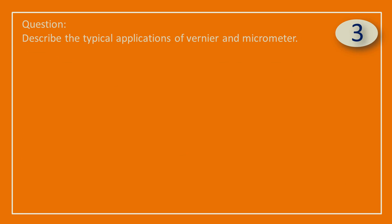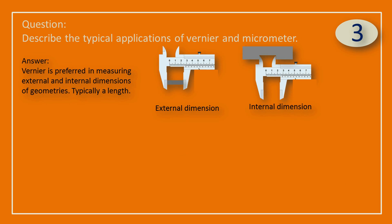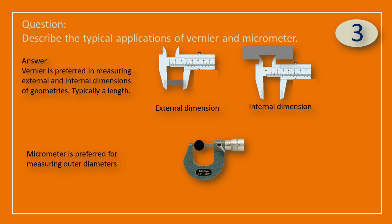Question: Describe the typical applications of Vernier and micrometer. Answer: Vernier is preferred for measuring external and internal dimensions of geometries, typically a length. Micrometer is preferred for measuring outer diameters.